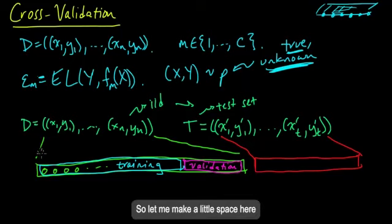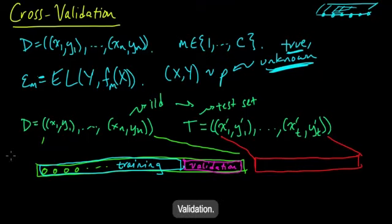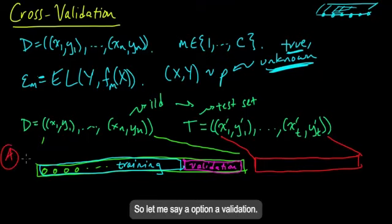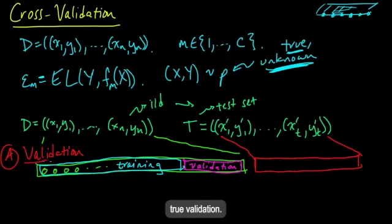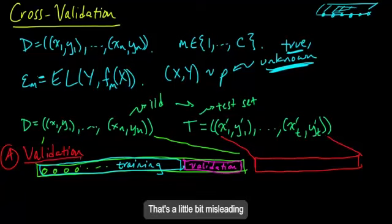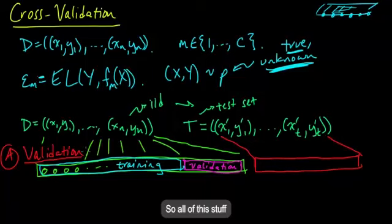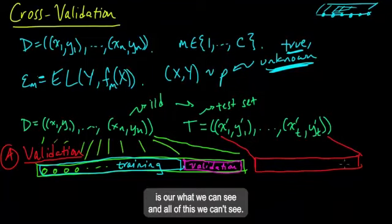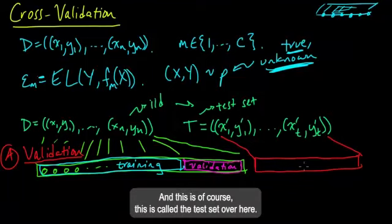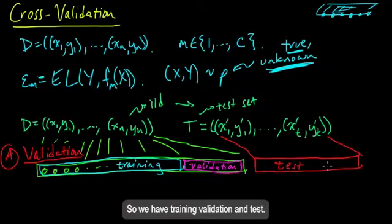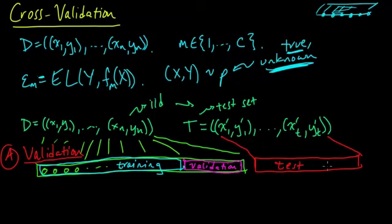And then we could train for each of the models M. We could train it on the training set and then evaluate its performance on the validation set. And then do the same thing. Choose the one with the smallest empirical error on the validation set. That is called validation. So option A: validation, or sometimes people call this true validation. That's a little bit misleading, but that's sometimes what it's called. So all of this stuff is what we can see. This is just imaginary. And this is called the test set over here. So we have training, validation, and test.